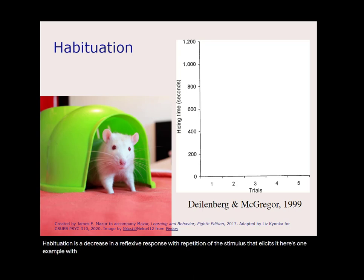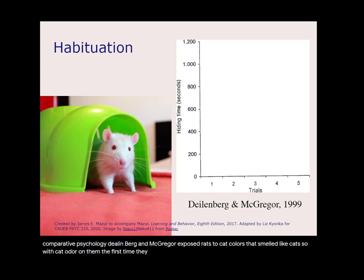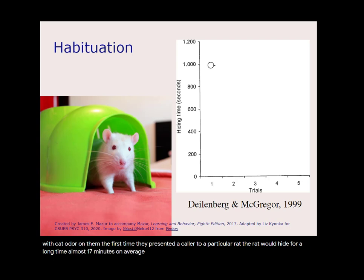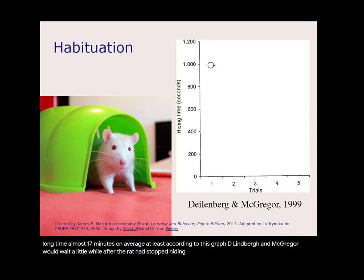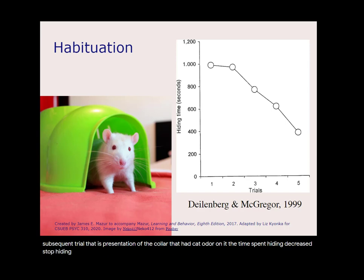Here's one example with rats' responses to a cat odor. In an experiment published in 1999 in the Journal of Comparative Psychology, Dielenberg and McGregor exposed rats to cat collars that smelled like cats. The first time they presented a collar to a particular rat, the rat would hide for a long time — almost 17 minutes on average. With each subsequent trial, the time spent hiding decreased. That is, the response to the collar habituated.